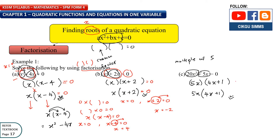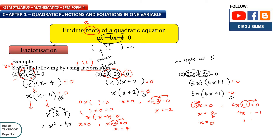The same steps apply here: equals 0, equals 0. The front part equals 0 and the second part equals 0, then solve. 5 times x — the relation is multiplication — so if you bring 5 over it becomes divide by 5: 0 divided by 5 is 0, so x is 0. For the second part, move plus 1 there to become minus 1, and move 4 there to become divided by 4. So the roots are 0 and negative 1 over 4.